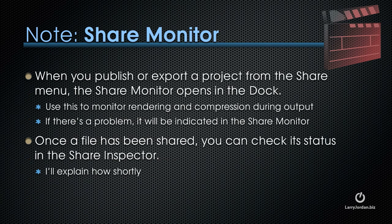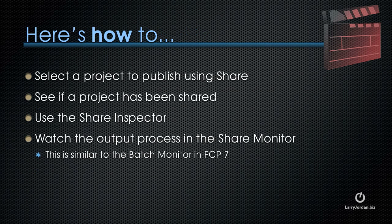When you publish or export a project from the Share menu, the Share Monitor opens in the dock. You can use this to monitor rendering and compression during output. If there's a problem, it will be indicated in the Share Monitor. Once a file has been shared, you can check its status in the Share Inspector. Let me show you how to select a project to publish using Share, see if a project has been shared, use the Share Inspector, and watch the output process in the Share Monitor. The Share Monitor is similar to the Batch Monitor used in Final Cut Pro 7.